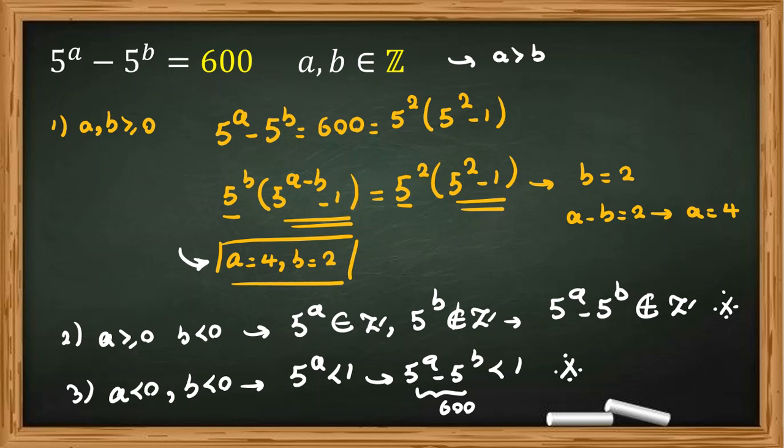As homework, let me write a problem. Try to solve this: 5 to the A minus 5 to the B equal to 3,000.